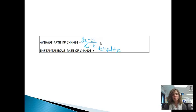They're both slopes, but this is the slope of a secant line, which touches a function in two places. And the second one is looking for the slope of the tangent line.